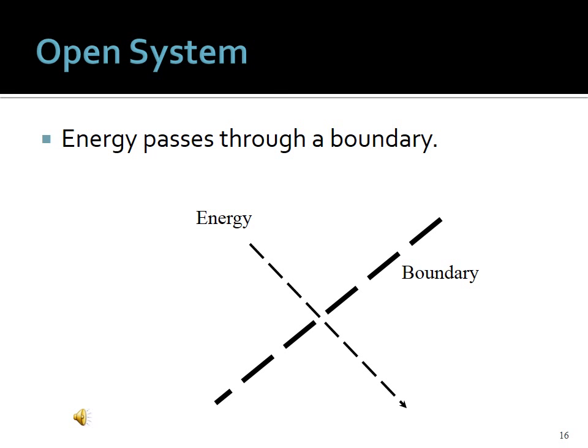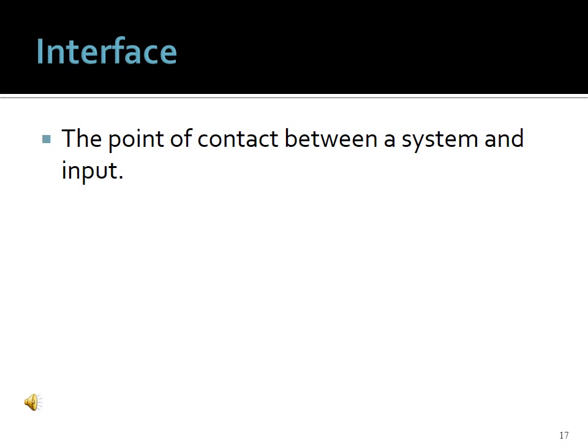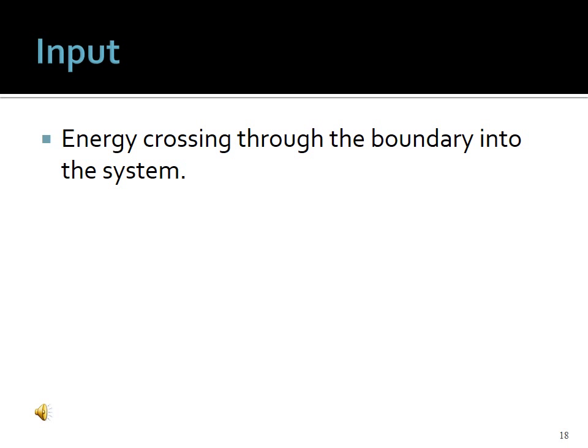Energy passes from the environment through the boundary at the interface — the point of contact between the system and input. Input is energy crossing through the boundary into the system. Our environment is rich with sources of input that are both natural and cultural. Our senses gather input; education is a formalized form of input where learning is presented to the student. Food is another source of input, and people receive all kinds of input from other people, which helps shape our perception of who and what we are.